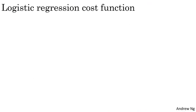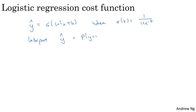To quickly recap, in logistic regression we have that the prediction y hat is sigmoid of w transpose x plus b, where sigmoid is this familiar function. And we want to interpret y hat as the probability that y is equal to one given x. So we want our algorithm to output y hat as the chance that y is equal to one for a given set of input features x.